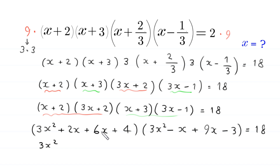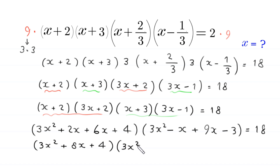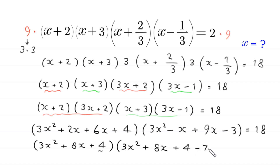Combining like terms, the first bracket gives 3x squared plus 8x plus 4, and the second bracket gives 3x squared plus 8x. We rewrite negative 3 as plus 4 minus 7, so the second bracket becomes (3x squared plus 8x plus 4) minus 7, and this equals 18.